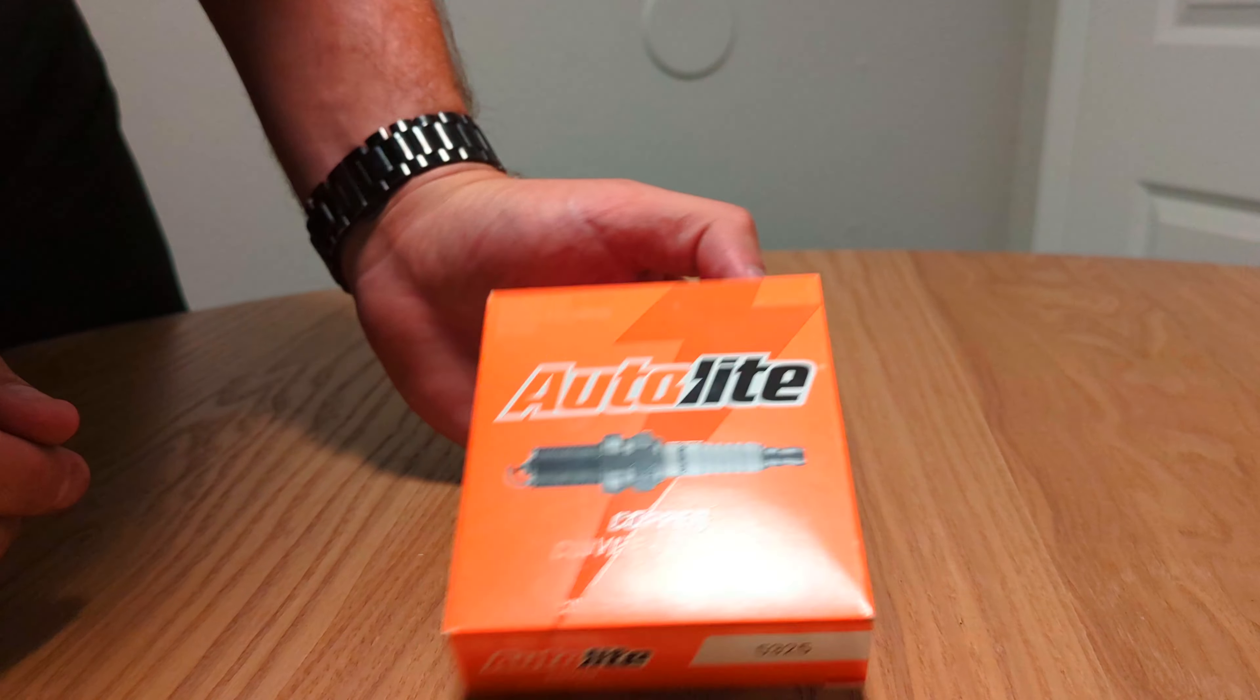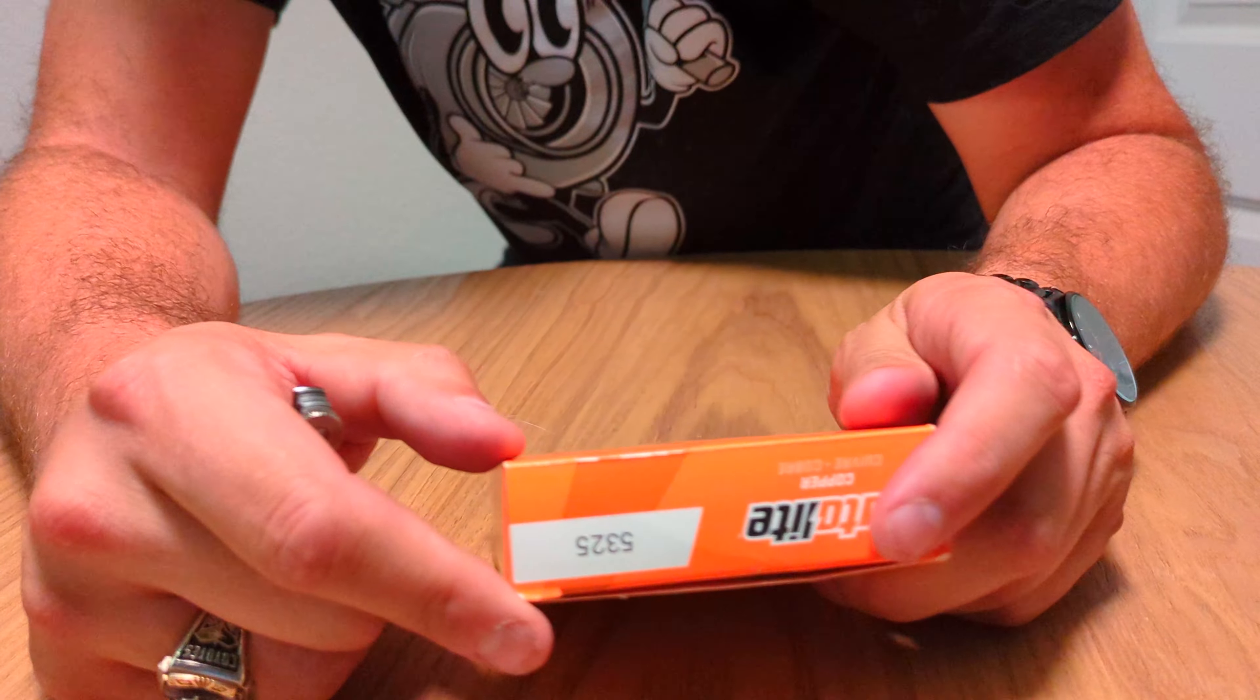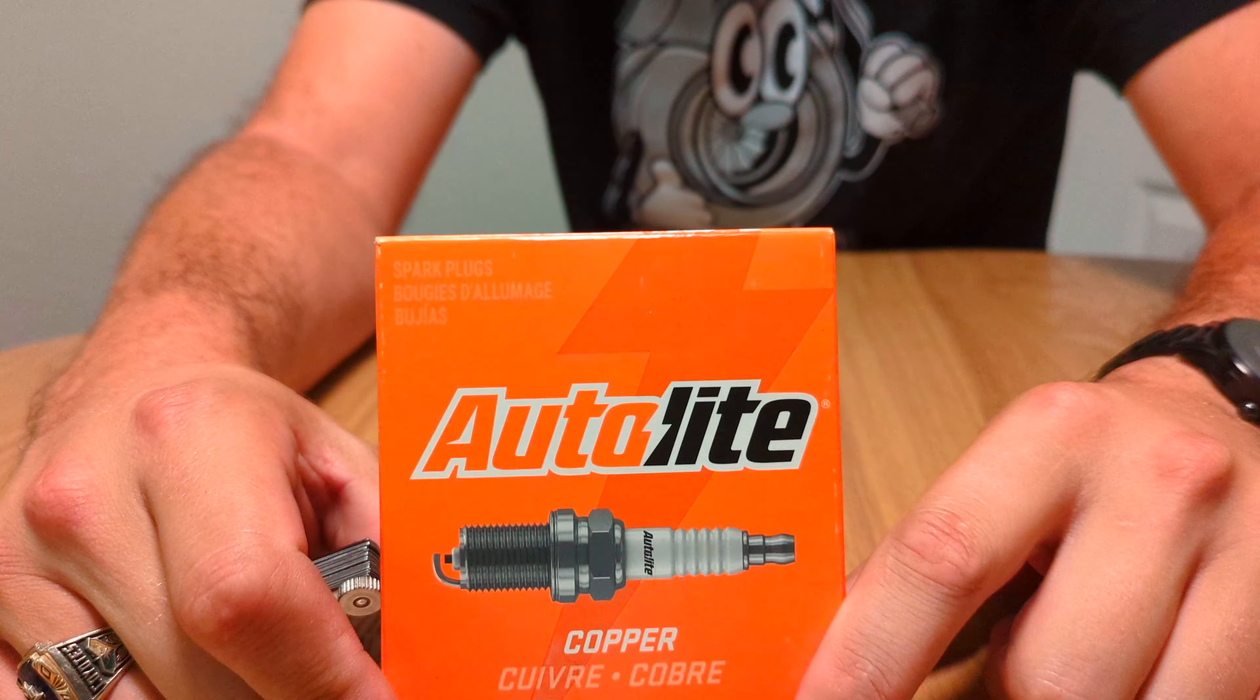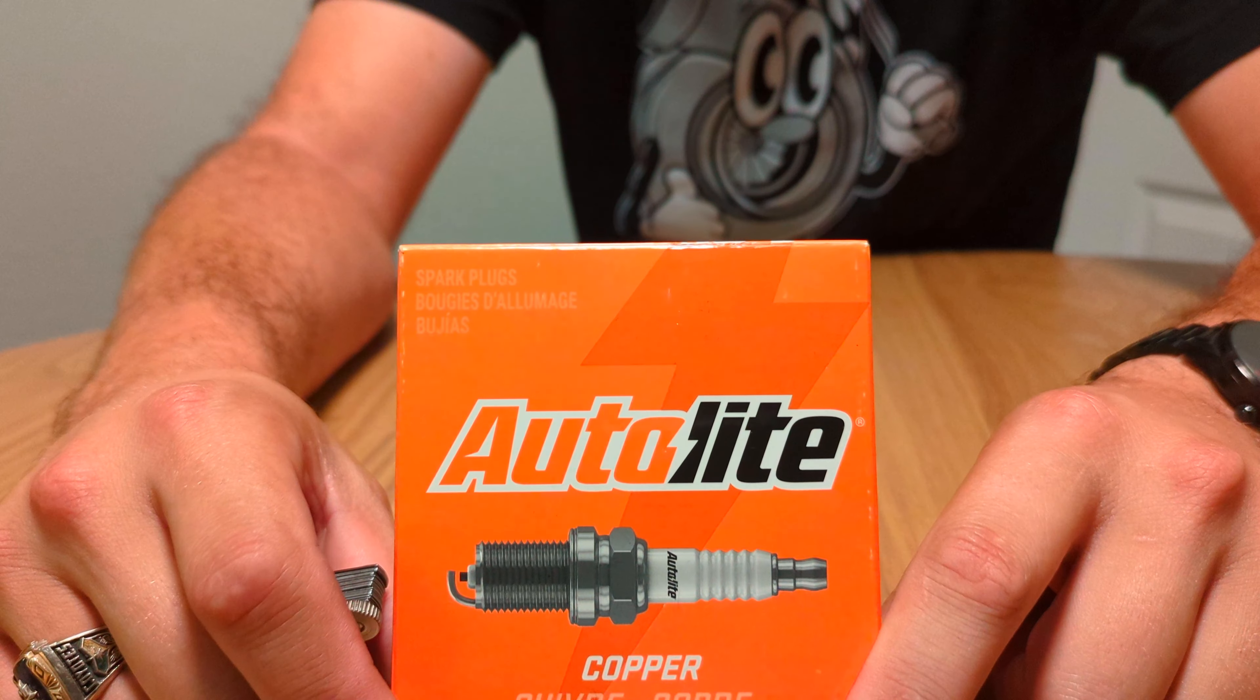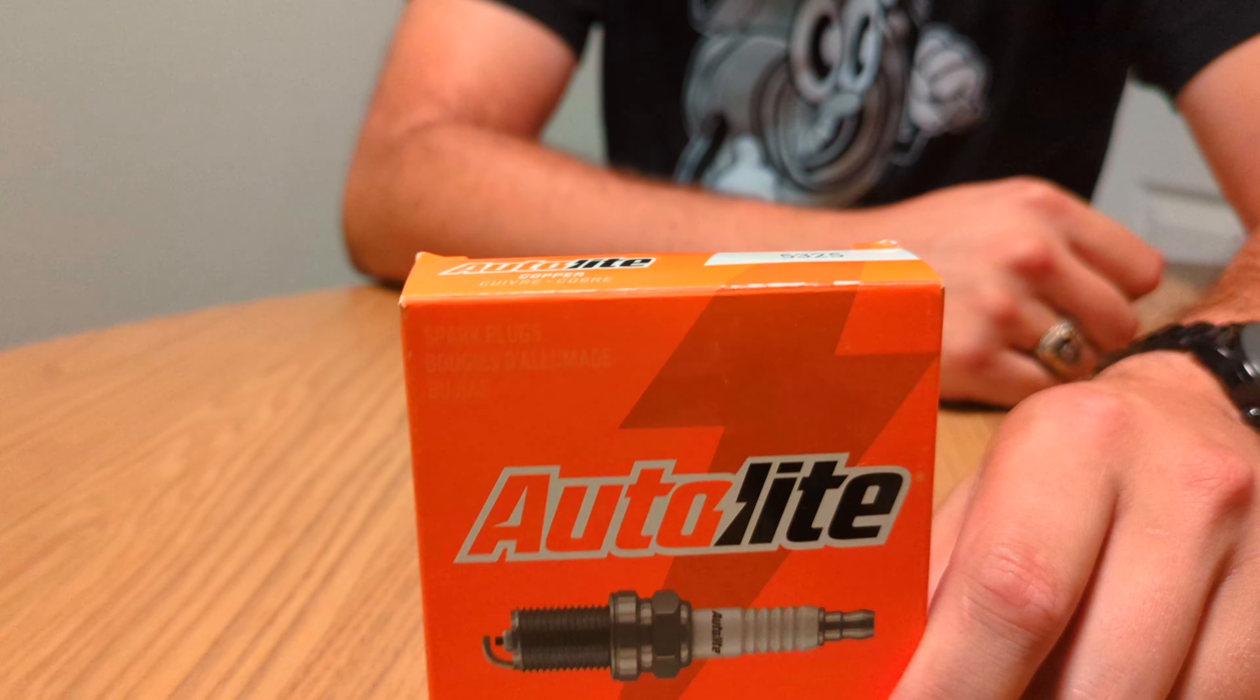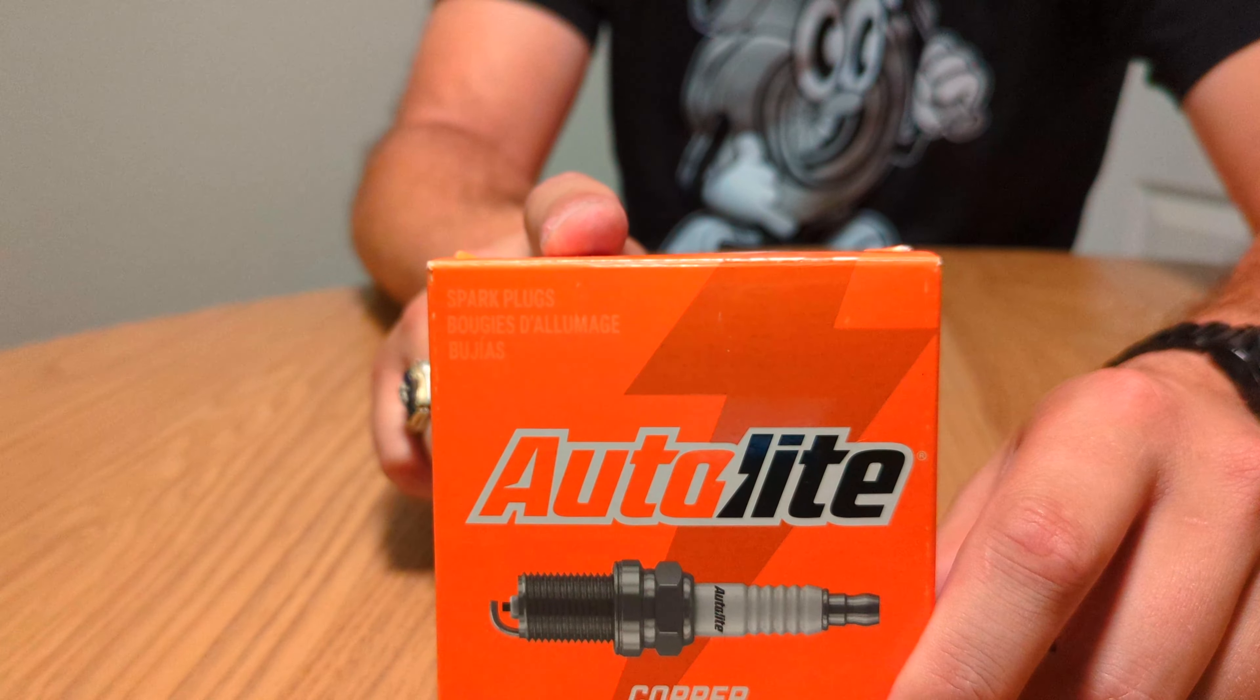So I have a previous video on why I use these Autolite spark plugs that are copper. You can go watch that video and see why I do that. But instead of using the NGK 2309 Iridium plugs, I used these, and all I did was just cross-reference the NGK 2309 spark plug and these are what came up as suitable replacements.